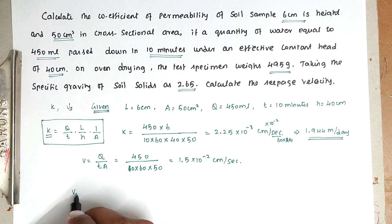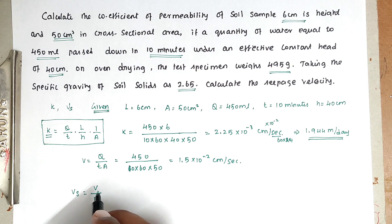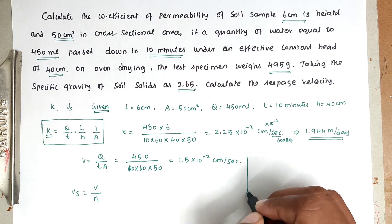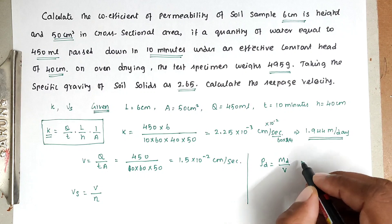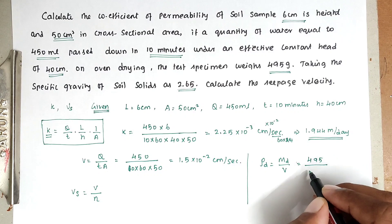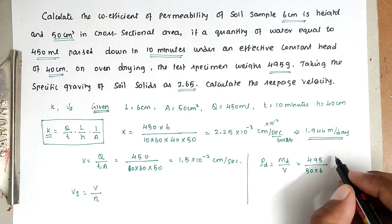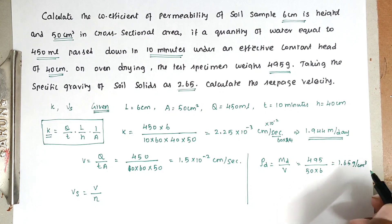Now we find the seepage velocity Vs = v divided by n, where n is porosity. To find porosity, we first find void ratio from dry density. Dry density ρd = md / V = 495 divided by (50 × 6) = 1.65 grams per centimeter cube.